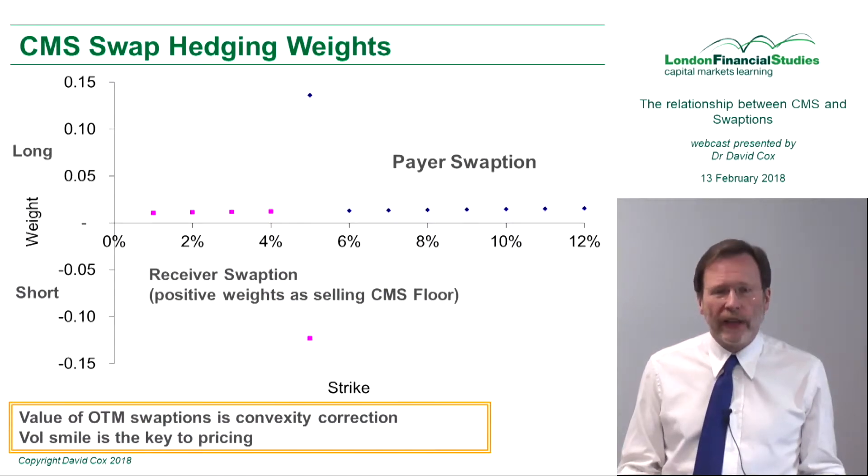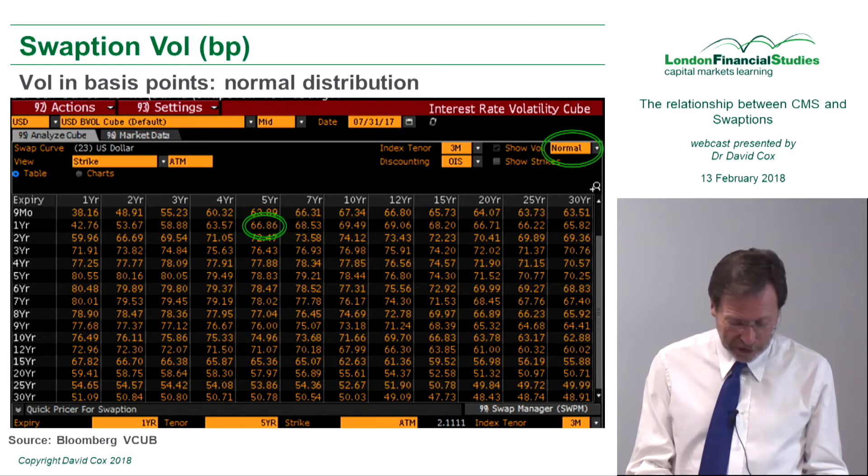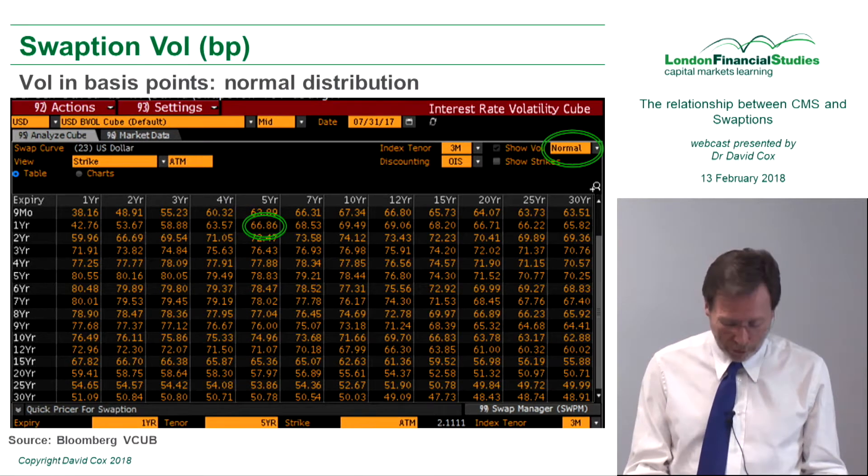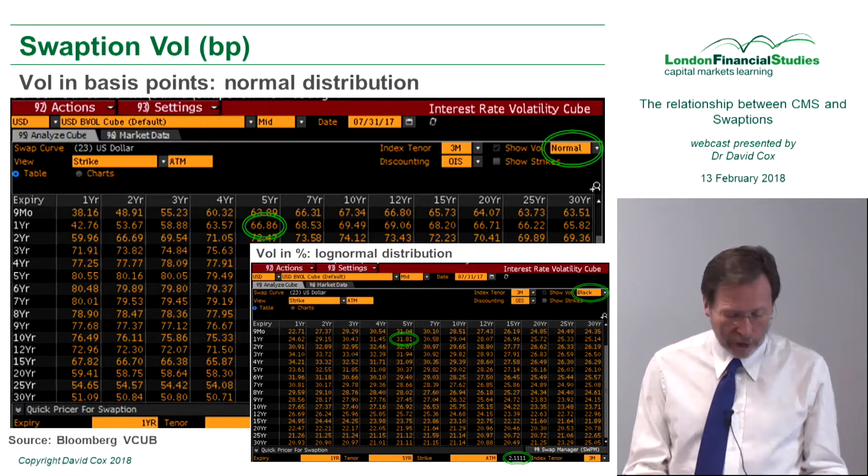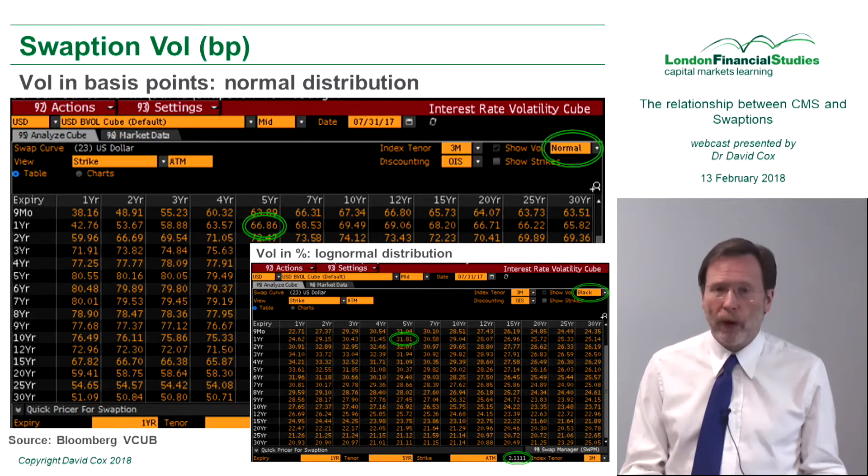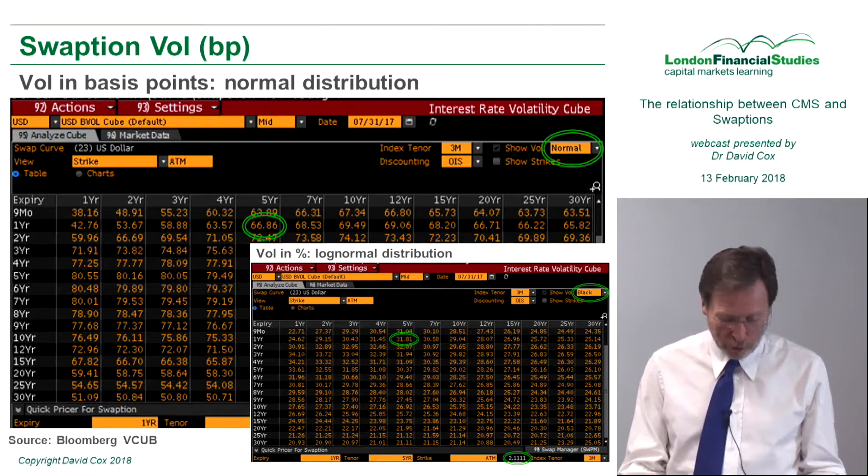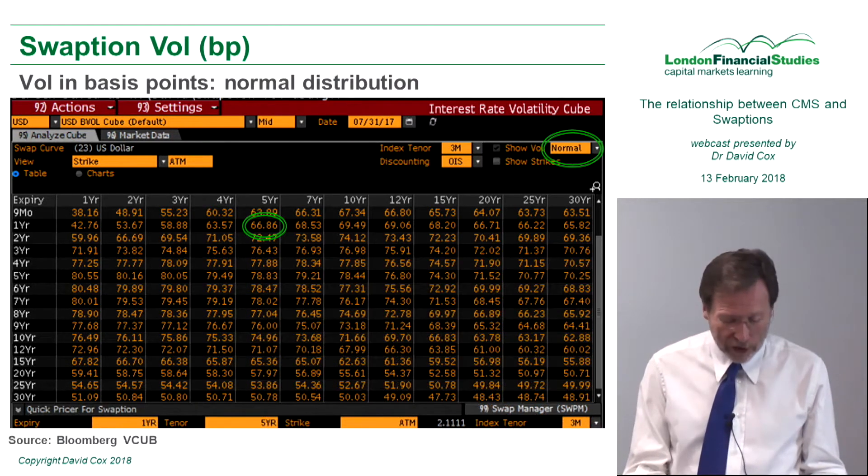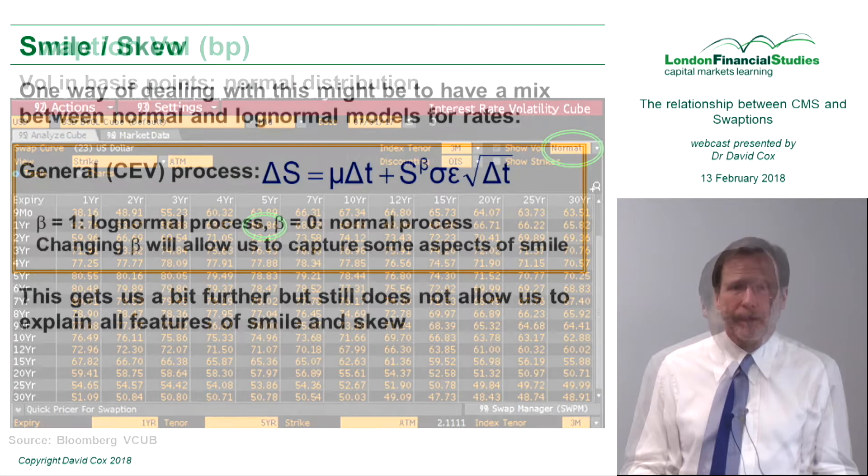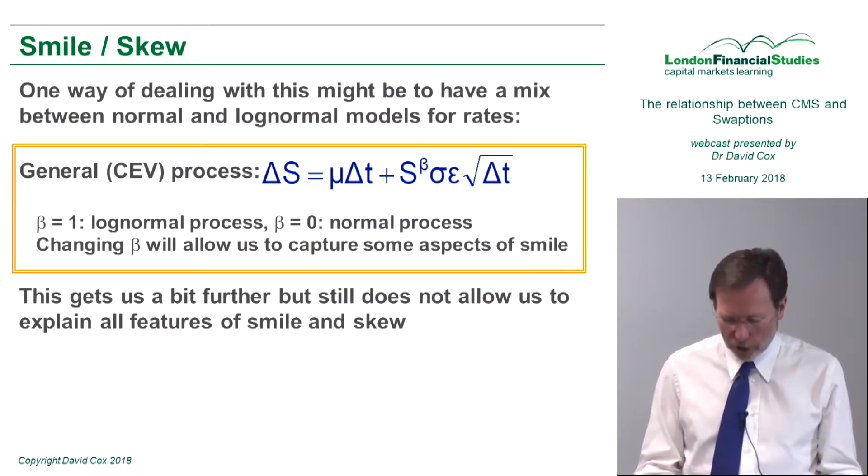We can now start to think a little bit about valuing those swaptions which are out-of-the-money. And you can see here it's about 2.11%. If you multiply your 31.81% by the 2.11%, which is the swap rate, the forward-starting swap rate, you get to a good degree of approximation in our model. So we have to move things on a little bit.